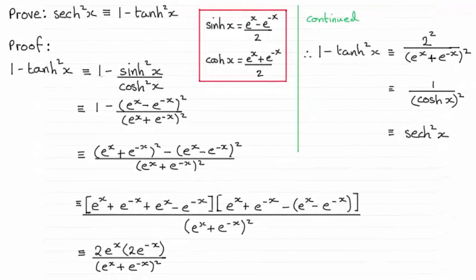Hi there. Now for this question, you had to prove that sech²x is identical to 1 - tanh²x using the hyperbolic functions sinh x and cosh x.